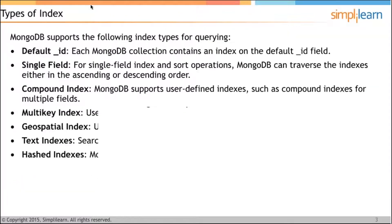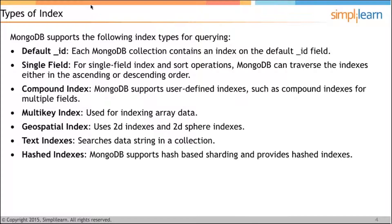There are different types of indexes in MongoDB. By default, the underscore ID field is indexed — each MongoDB collection contains an index on the default underscore ID field. For a single field index, MongoDB can traverse the index either in the ascending or the descending order, which is why the values one and minus one come into picture. For a single field index, it can traverse in both directions.